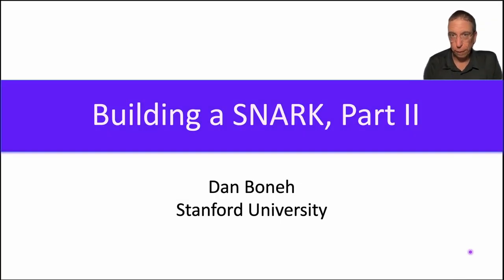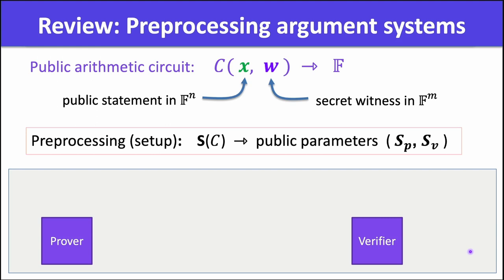Welcome back, everyone. In this segment, we're going to finish our construction of a SNARK, and in particular, I want to show you all the beautiful algebraic ideas that go into constructing a SNARK. First, let's quickly review where we were. As usual, we fix our computing model to be an arithmetic circuit, so all computations will be expressed as an arithmetic circuit. An arithmetic circuit involves additions and multiplication gates modulo p. This is not the only computing model possible, but it's convenient for us today.